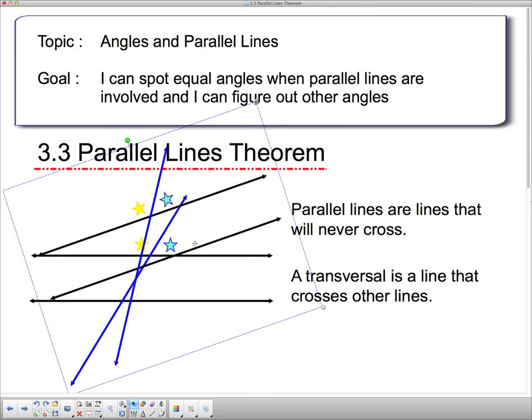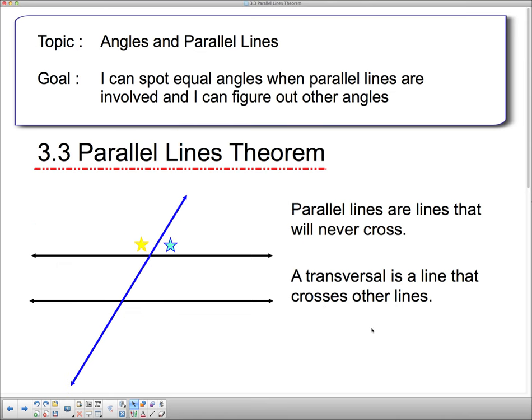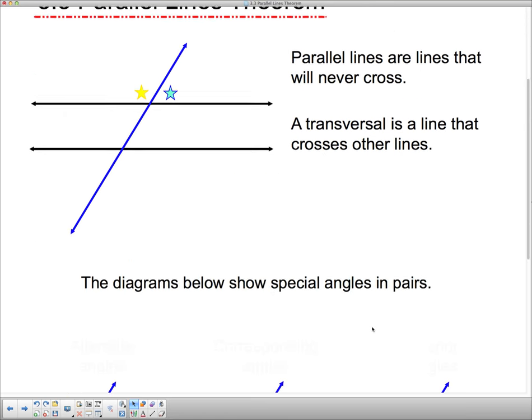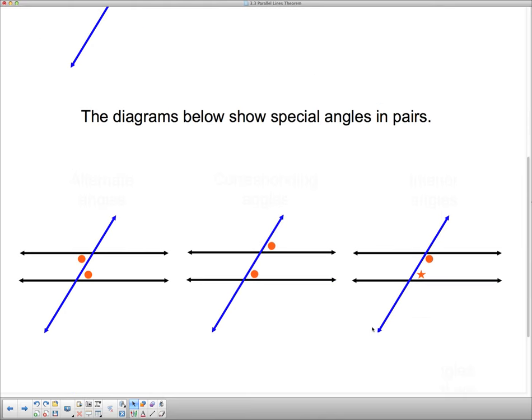So I'm just going to tell you the different types of lines. And you may have heard this before in elementary school. So these diagrams show the special angle pairs. So here, these two angles are equal. And they're called alternate angles.